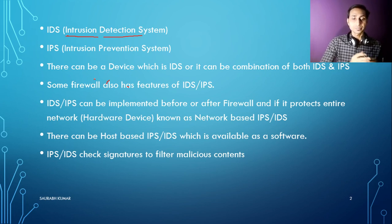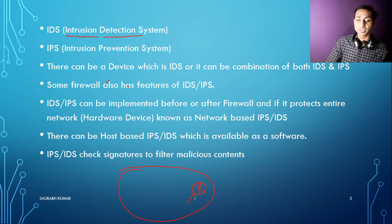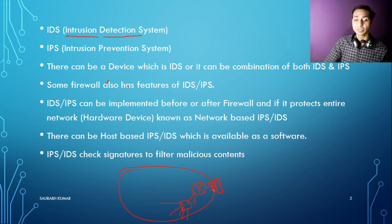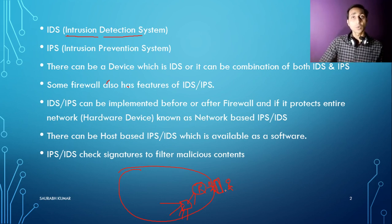IDS and IPS can be implemented before the firewall or after the firewall - that completely depends on the requirement. For example, in an organization network with a router connected to a switch and then to all PCs, after the router we can have a firewall. IDS and IPS can be either after the firewall, working better especially for application layer protection, or before the firewall. It depends on which kind of IDS or IPS you are using and what function you are looking for.